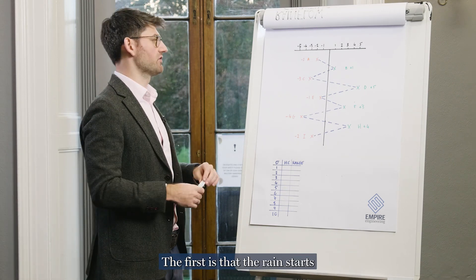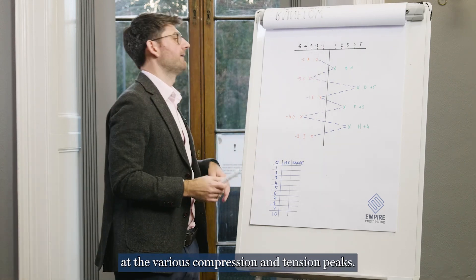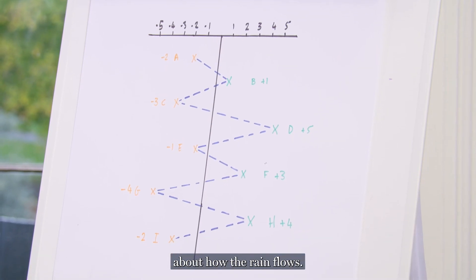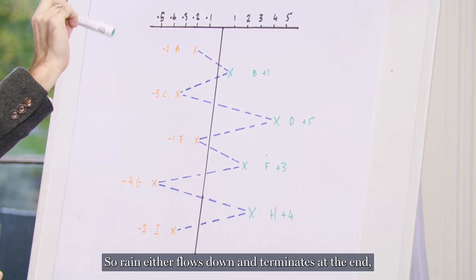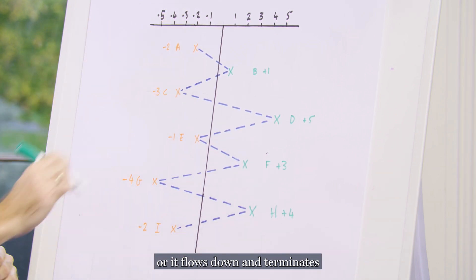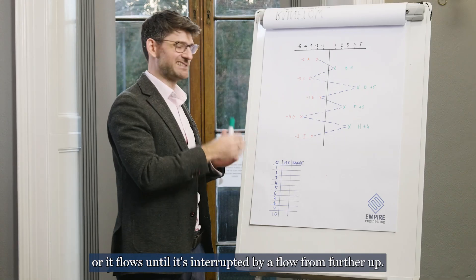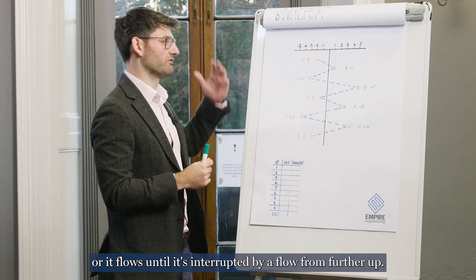The first is that the rain starts at the various compression and tension peaks. And then there are three other rules about how the rain flows. So rain either flows down and terminates at the end, or it flows down and terminates when it passes a peak of greater magnitude, or it flows until it's interrupted by a flow from further up.